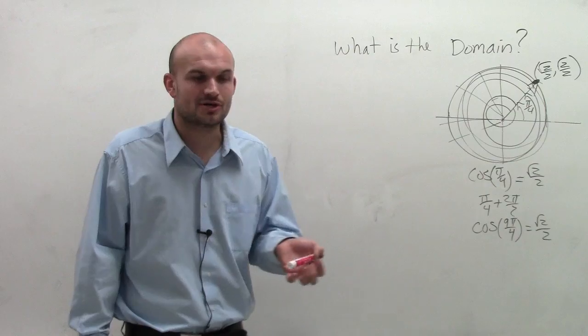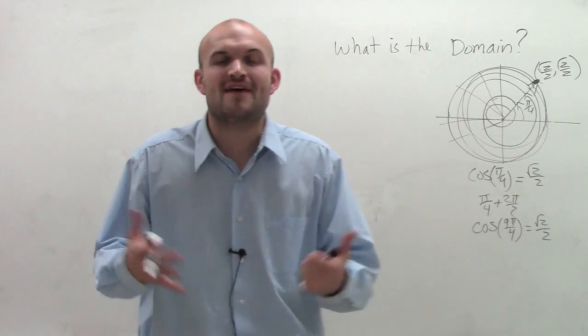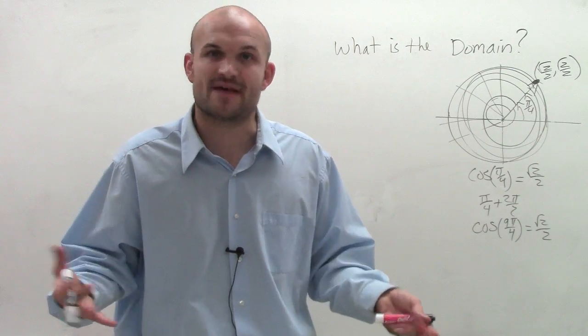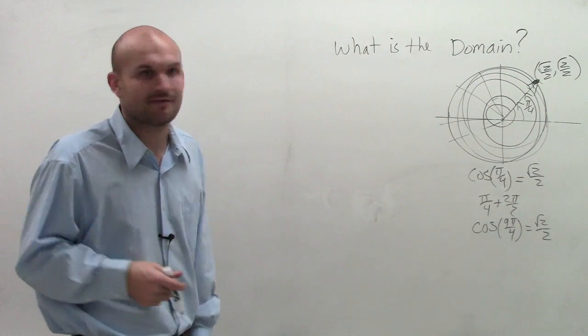So finding coterminal angles means adding 2 pi or subtracting 2 pi. So right now, by looking at the unit circle, I have in my mind that the domain is all real numbers. There's not a value or a point on the unit circle that I could plug into my function and not receive a value back out of it. And let's go ahead and prove that by showing what our graph looks like.